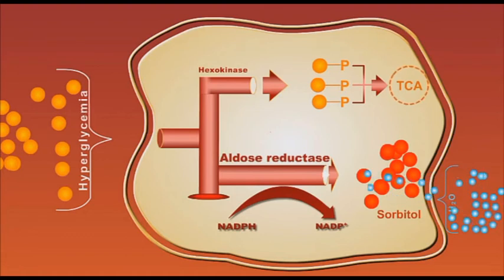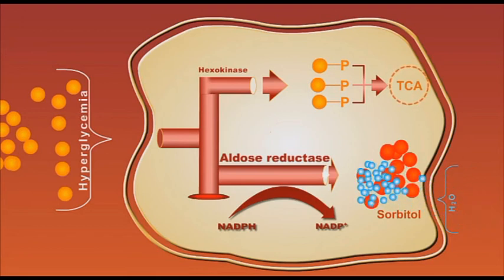Because sorbitol cannot pass through the cell membrane, it is trapped inside the cell, drawing water to the inside by osmotic effects, causing the cells to swell and contributing to the pathological effects of diabetes.